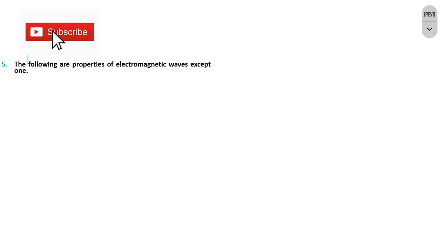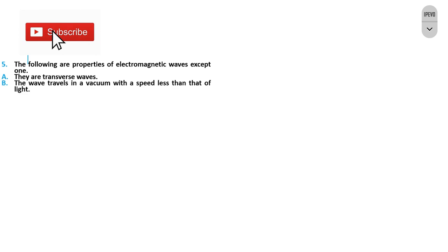Question 5. The following are properties of electromagnetic waves except one. The options are: they are transverse waves; the wave travels in a vacuum with a speed less than that of light; electromagnetic waves require no medium of propagation; they can be plane polarized. The correct option is B.